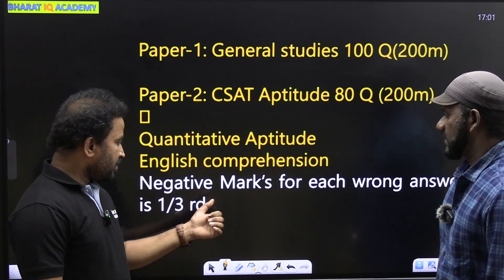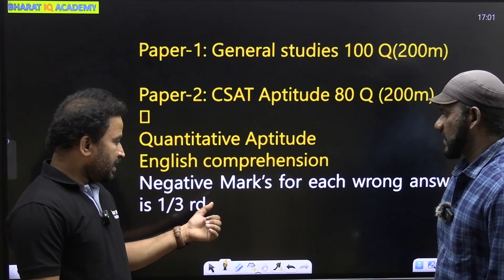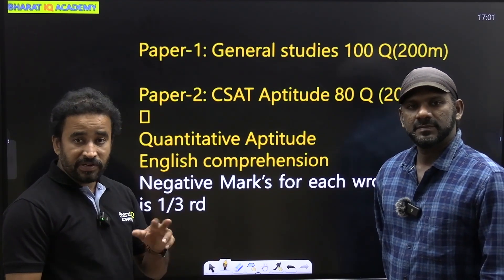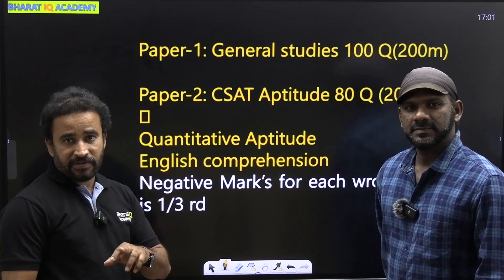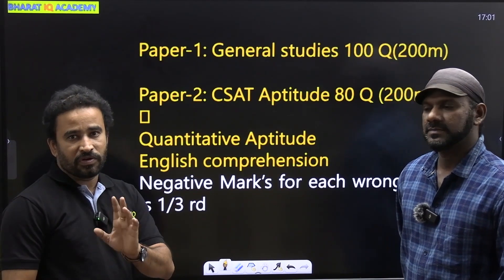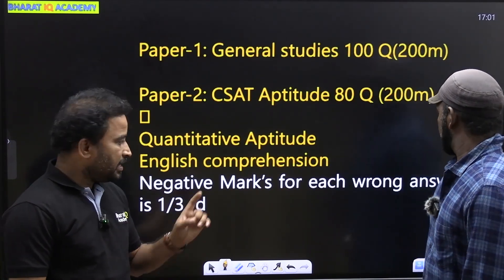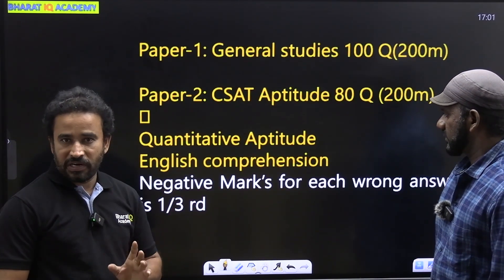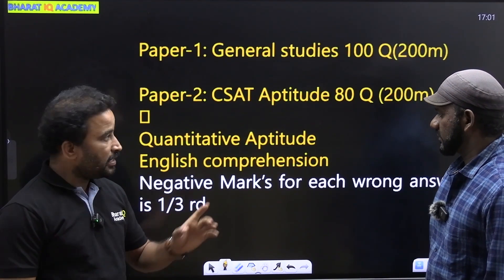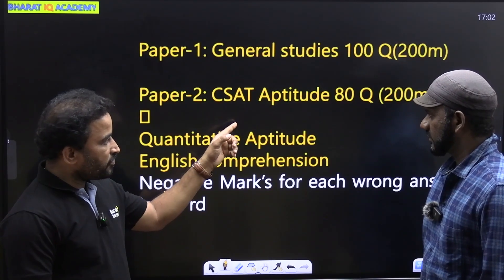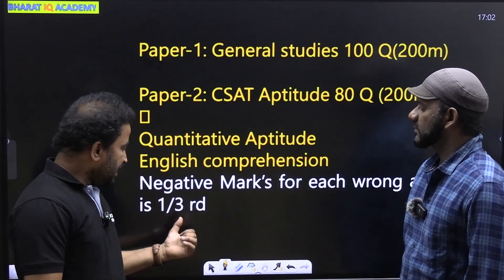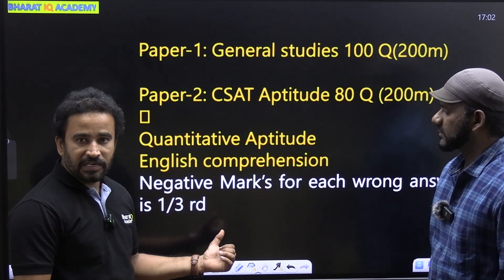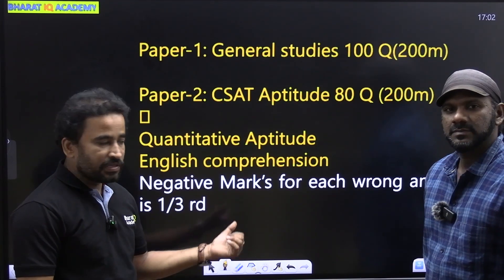For each and every question, we are getting negative marking also. For every correct answer, two and a half marks. The number of questions is 18, and the negative marking is one-third negative marking.